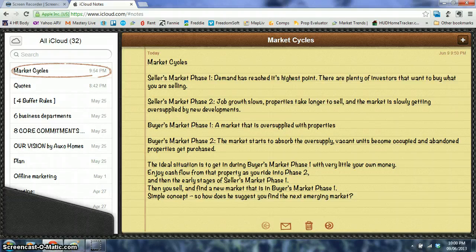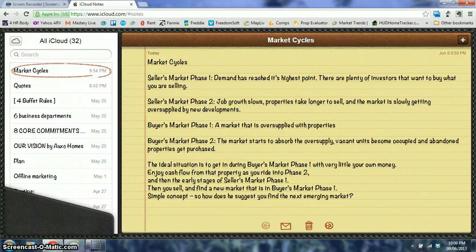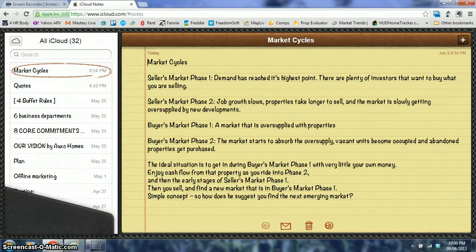The buyers market phase one is a market that is oversupplied with properties. This is places like Atlanta Georgia, Charlotte North Carolina - those are emerging markets. Then other markets like Florida and Arizona have an oversupply of properties but they're slowly cleaning up. The buyers market phase two is when the market starts to absorb the oversupply, the vacant units become occupied, and the abandoned properties get purchased.